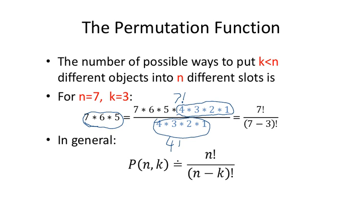So we get this expression, seven factorial divided by seven minus three factorial. And in general, this is called the permutation function. And the permutation function for k out of n objects is n factorial divided by n minus k factorial.